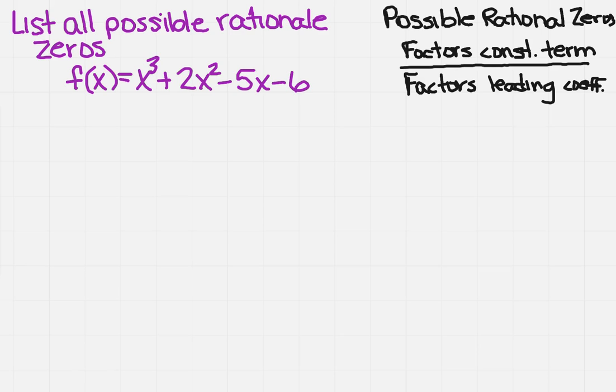I've got to figure out my constant term. My constant term in x³ + 2x² - 5x - 6 is the 6.